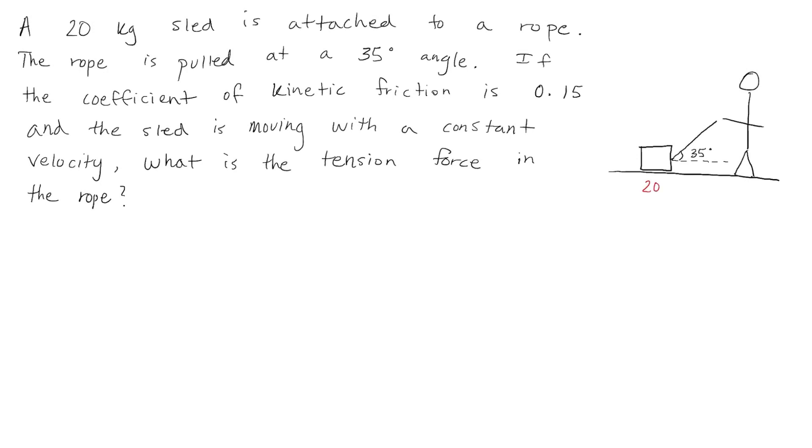In this question, a 20 kilogram sled is attached to a rope, and the rope is being pulled at a 35 degree angle. If the coefficient of kinetic friction is 0.15, and the sled is moving with a constant velocity, we want to know what is the tension force in the rope.